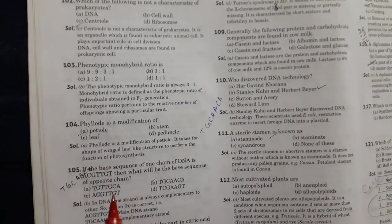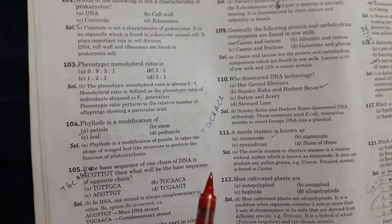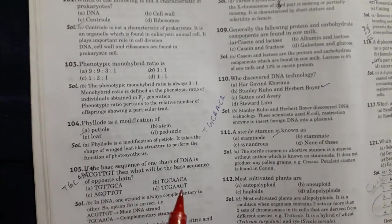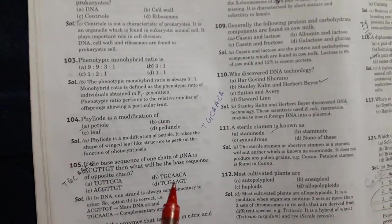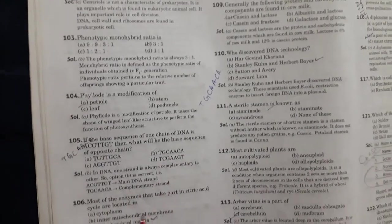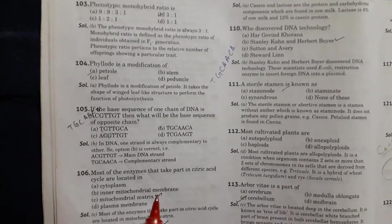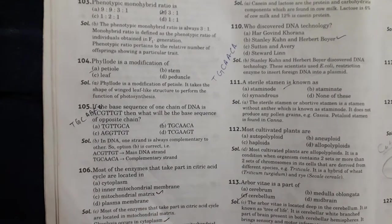Then if the base sequence of one chain of DNA is A, C, G, T, T, G, C, G, T, then what will be the base sequence? Then this is T, G, C, A, A, C, G, C, A. Next is most of the enzyme that take part in citric acid cycle are located in mitochondrial matrix.